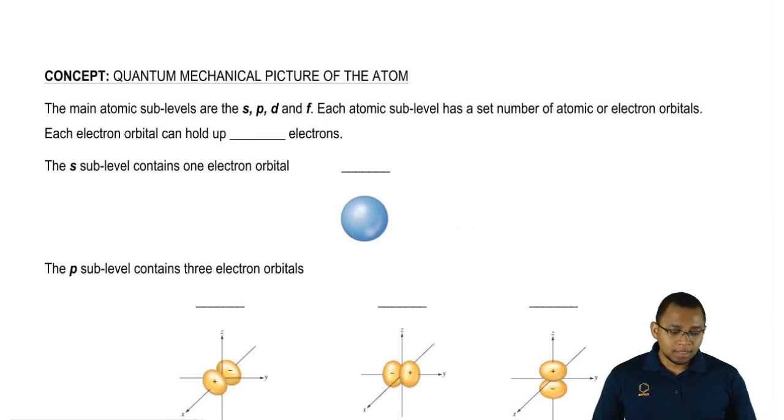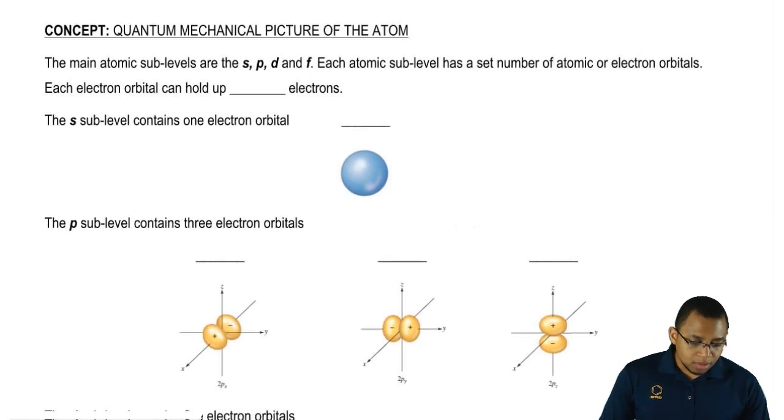Now, within each of these shells, we have these sub-levels and remember there are four sub-levels: S, P, D, and F. There's also more beyond that - there's G, there's H, but you just need to know these four basic types. Each one of these sub-levels has a unique shape that's characteristic of it. Each of these sub-levels contains a certain number of electron orbitals, and each one of these electron orbitals can hold up to two electrons.